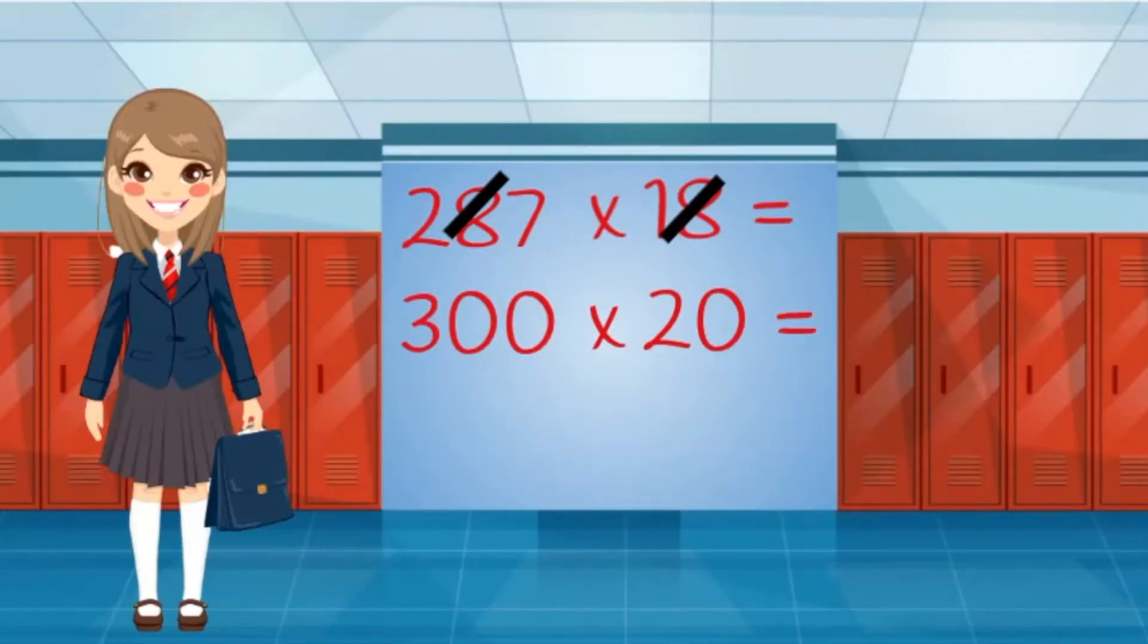To estimate, I will multiply 300 times 20. I'll ignore the zeros for now. Three times two equals six. I need to add back the three zeros from the numbers - that makes 6,000. Since I rounded both numbers up, that will definitely be enough.